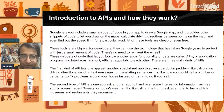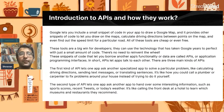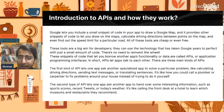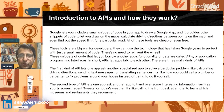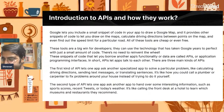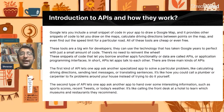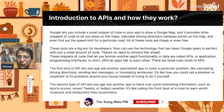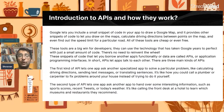Now, the last part for today is understanding what APIs are and how they work. For example, in Uber's app, what you see on the map — do you think Uber has built that complete map? Absolutely not. Google lets you input a small snippet of code in your app to draw a Google Map — it provides all the functionality to draw out all the maps. So by incorporating a very small snippet of code, you can use the functionality of Google.